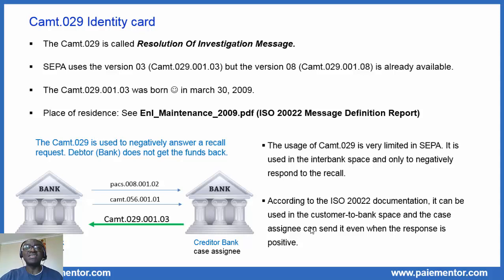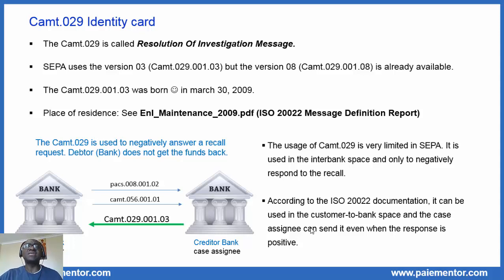With the CAM-56, the debtor bank takes the creditor bank to the SEPA court by assigning a case. The debtor bank is the case creator and the creditor bank is the case assignee. The CAM-29 is used by the creditor bank to negatively respond to a request of cancellation message of an original payment instruction that was received. It does not make the funds move in the interbank space. So the CAM-29 is just an information — the creditor bank says to the debtor bank: I'm not sending you the funds back.